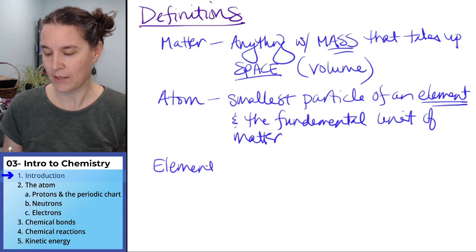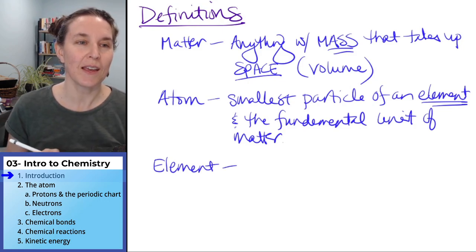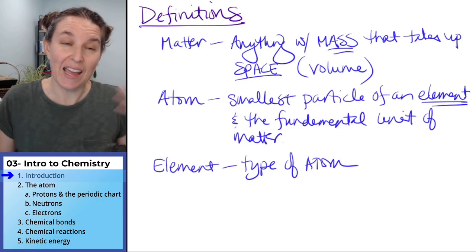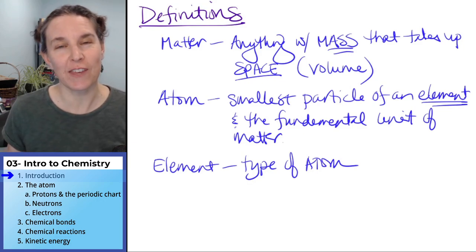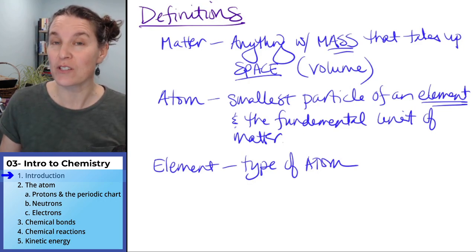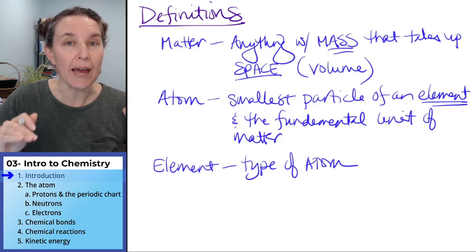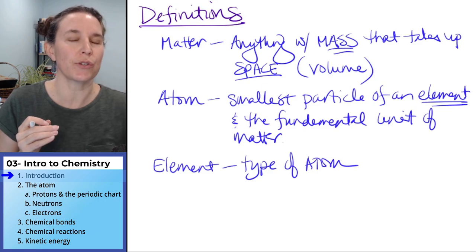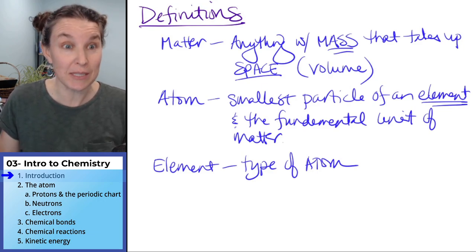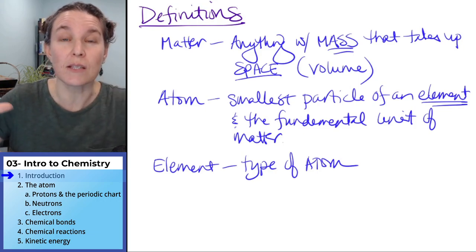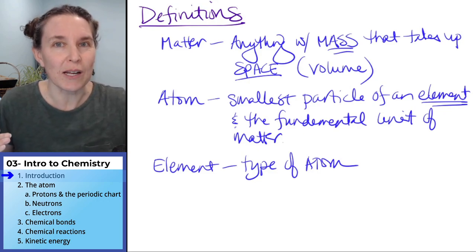Which guess what our next definition is? An element is a type of atom. I think of things in flavors and I think of elements as different flavors of atoms. When we look at the structure of an atom we will see that all atoms share certain characteristics. They're built from the same subatomic particles.